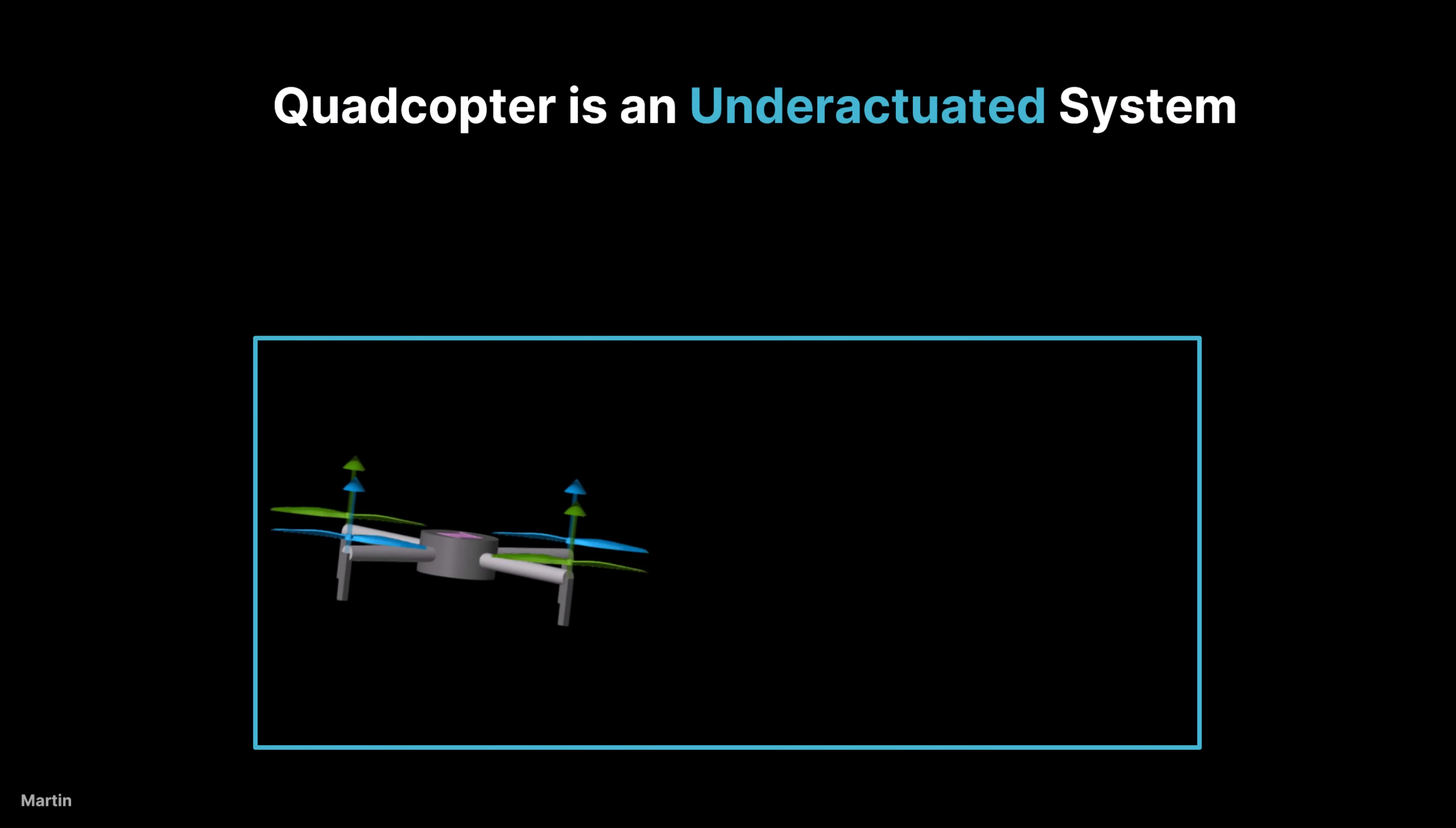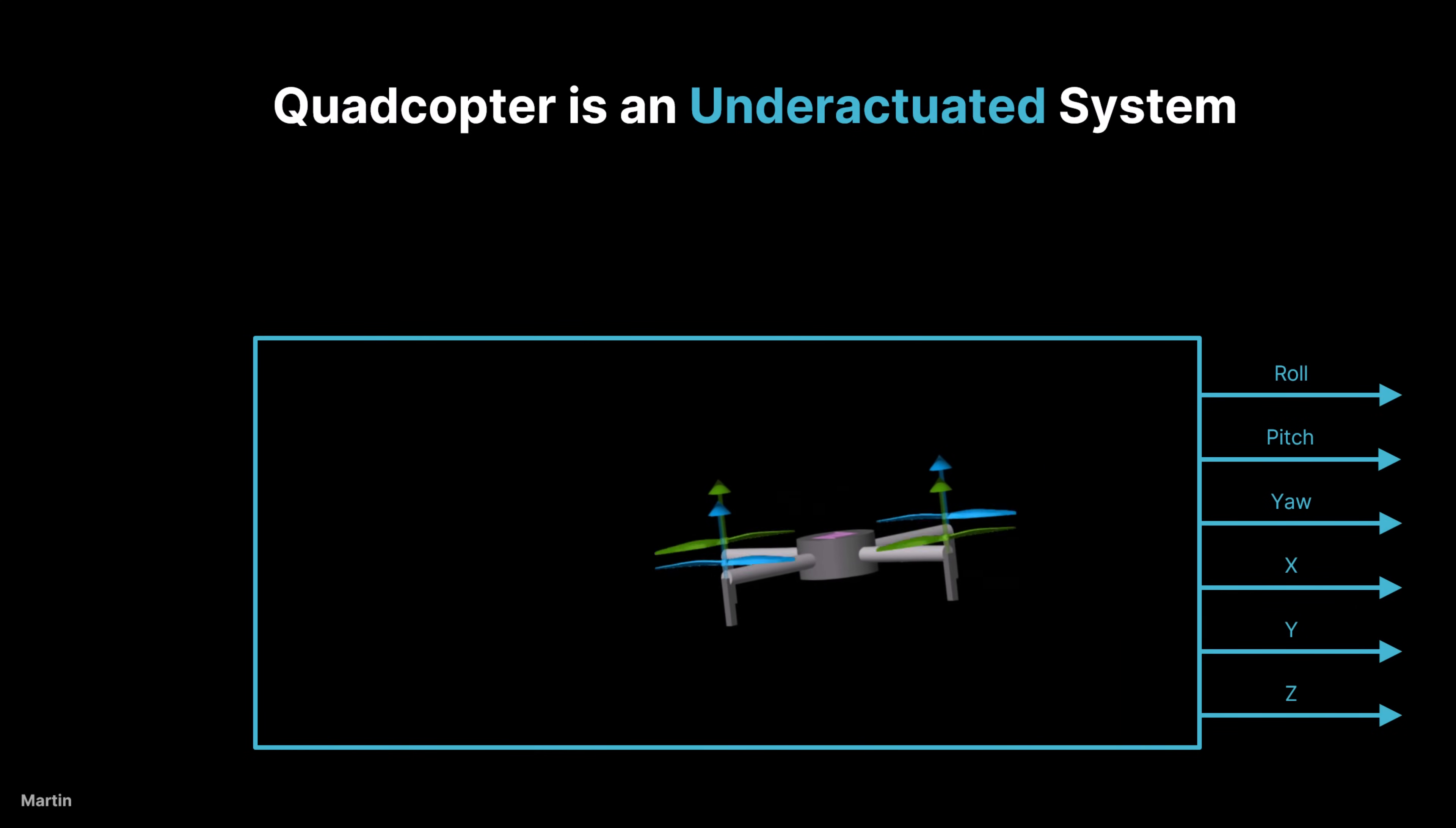A quadcopter is an underactuated system because it has fewer independent control inputs than degrees of freedom it needs to control. A quadcopter operates in six degrees of freedom: the translational motion in X, Y, and Z axis, and the rotational motions of roll, pitch, and yaw.